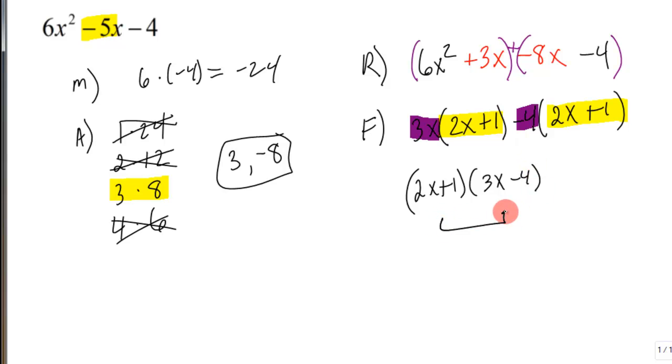Now the order of these two doesn't matter. You can put 3x minus 4 first and the 2x plus 1 second, but that's what's left. It's kind of like, think about taking this 2x plus 1 as one unit.